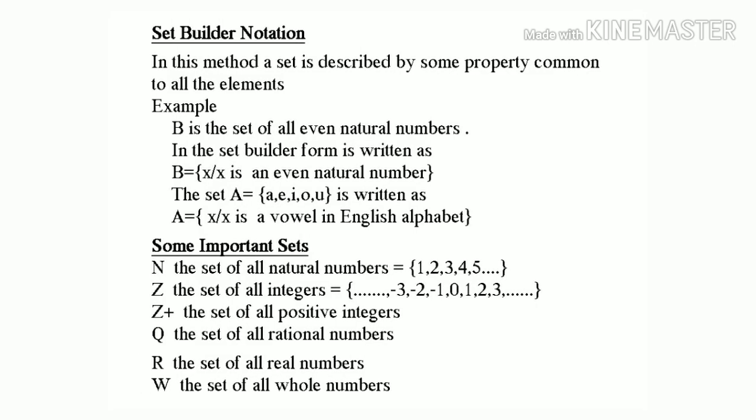Next is set builder notation. In this method, a set is described by some property common to all the elements. For example, B is the set of all even natural numbers. In the set builder form, it is written as B equal to {x such that x is an even natural number}. The set A equal to {a, e, i, o, u} is written as A equal to {x such that x is a vowel in English alphabet}.